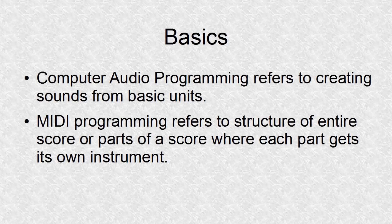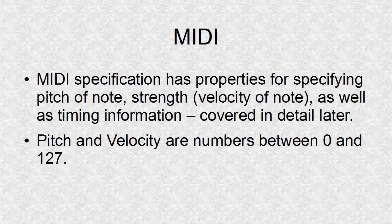Most computer programming in music refers to creating sounds. But MIDI is not sound — it is instructions of what kind of sounds to make in terms of pitch and strength. Strength is also called velocity. Both pitch and velocity are numbers between 0 and 127.